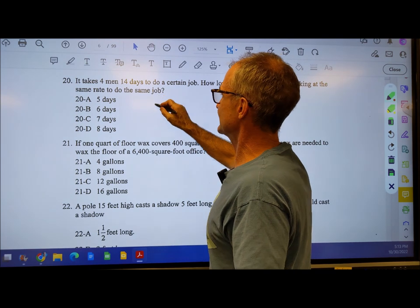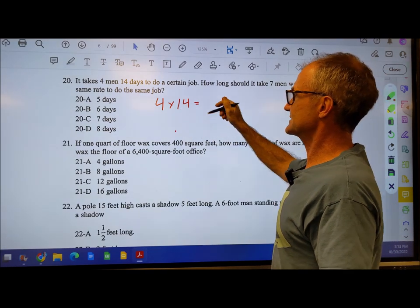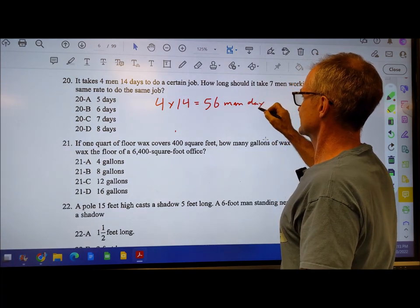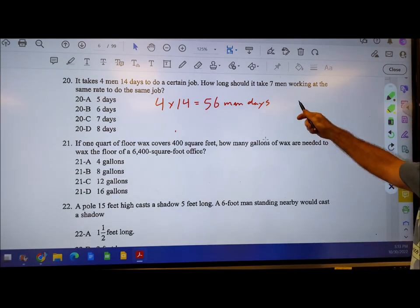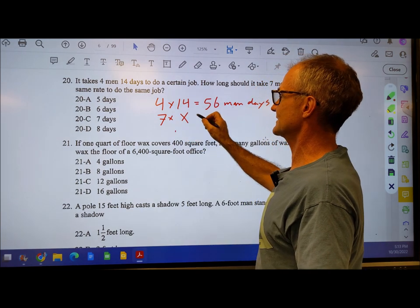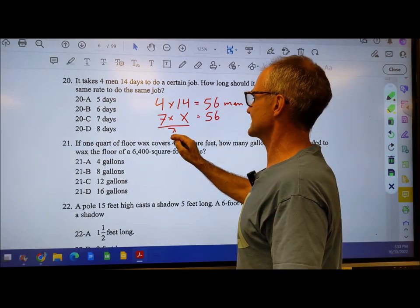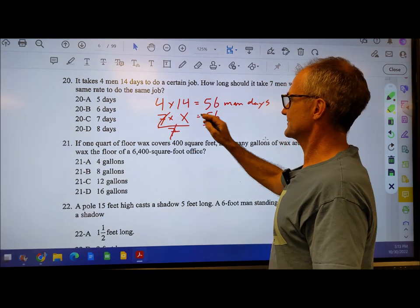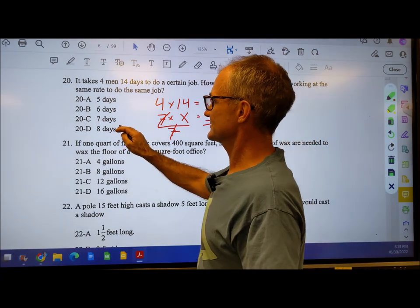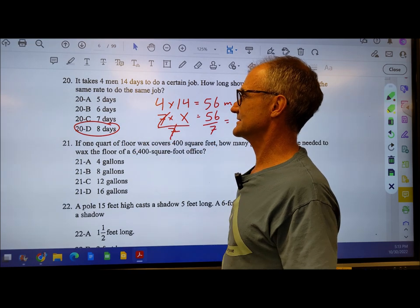Number 20, it takes four men 14 days. So I do 4 times 14, 56 man days. Then I have seven men working at the same job. So 7 men times how many days, I'll call it x, equals 56. To get that by itself, divide both sides by 7. x equals 56 divided by 7, or x equals 8. So it should take 8 days, which makes sense. You don't have quite twice as many men, so it should take about half as long.